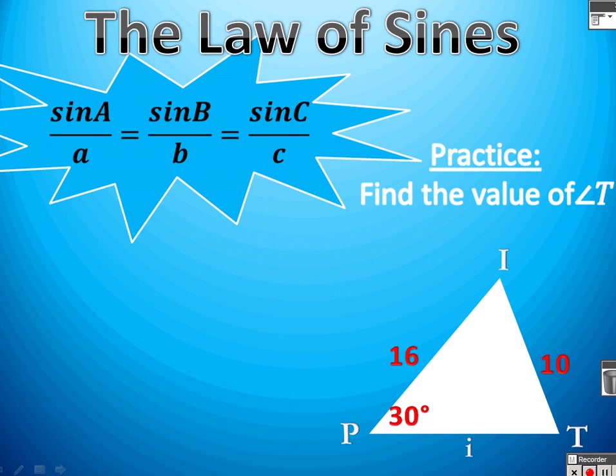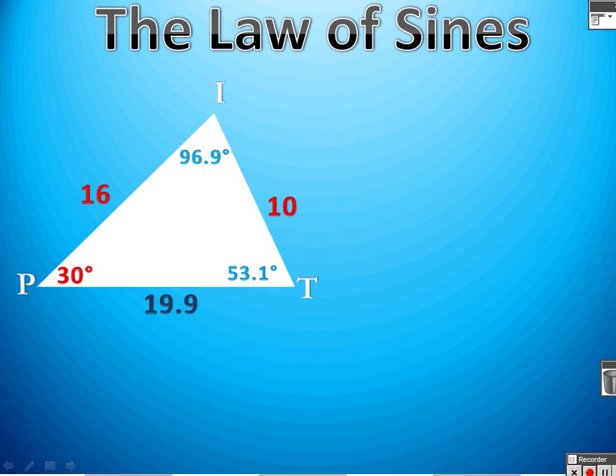One final one to look at. Triangle P-I-T. Again, pause the video real quick. I'd like you to try this one on your own and see if you can find what, in this case, the value of angle T is. Alright, hopefully you got your answer. Hopefully you got something like this. That angle T is 53.1 degrees.